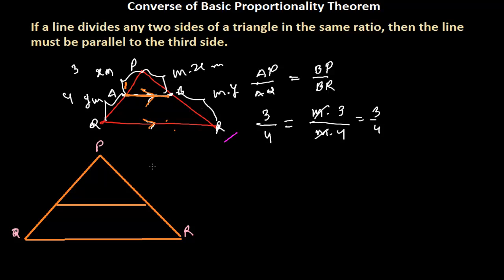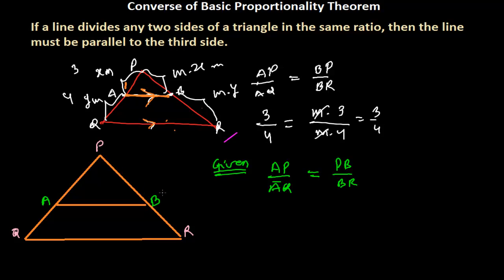Here is my figure. According to the given equation, point A and point B are marked. The given condition is that the ratio of AP over AQ is the same as PB over BR. We need to prove that AB is parallel to QR. We cannot simply say these are parallel yet, so we need to do a construction.